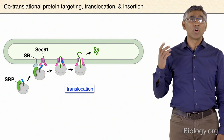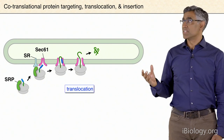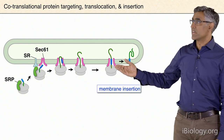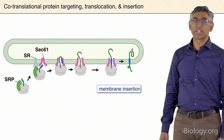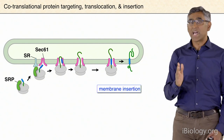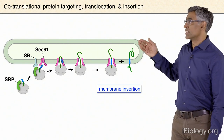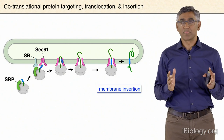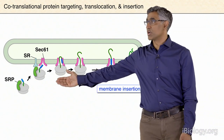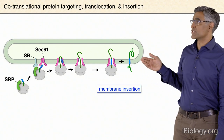The same machinery also deals with integral membrane proteins. For example, if a protein synthesizes a transmembrane segment, that hydrophobic sequence is allowed to laterally move into the lipid bilayer so that you can make an integral membrane protein that spans the bilayer. So you have a machinery that has to recognize proteins for targeting to the ER, for opening of the channel, and for insertion into the membrane.